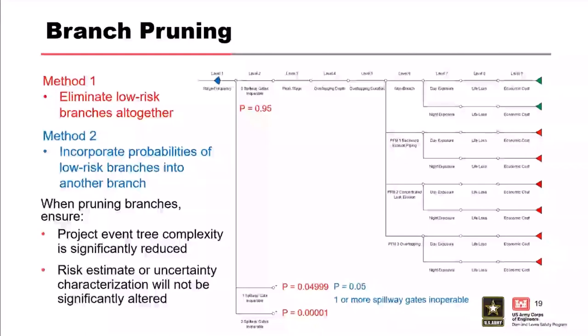Although advantageous, active branch pruning should be done with extreme care to ensure the risk estimate or uncertainty characterization won't be significantly altered. When pruning occurs, the risk team should document their reasoning and revisit the potential failure mode description to determine if rewording or adjustment is necessary. We must ensure the event tree complexity is significantly reduced and that the risk estimate or uncertainty characterization won't be significantly altered.